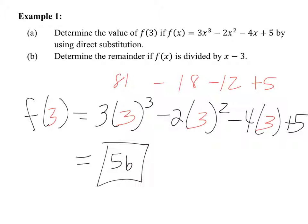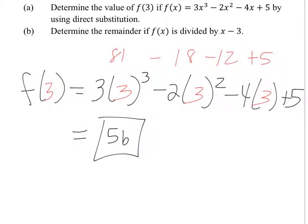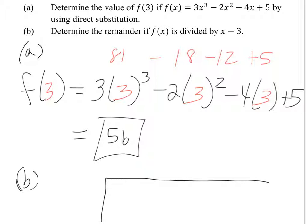Now let's do part B — determine the remainder if f(x) is divided by x minus 3. What's the setup for this? You can do it with synthetic or long division. I'm going to do it synthetically because it's dividing by x minus 3. Jeff, what goes on the outside of the synthetic table? 3.